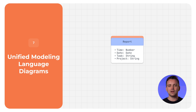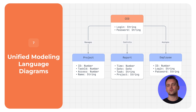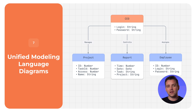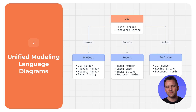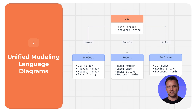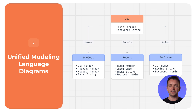Unified modeling language diagrams illustrate software systems and their interactions. Like data flow diagrams, UML diagrams fork into two distinct types: structural diagrams, which visualize the static structure of a system, and behavioral diagrams, which highlight the dynamic behavior of a system over time.